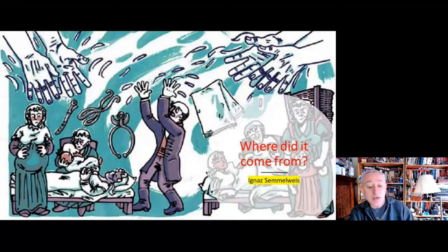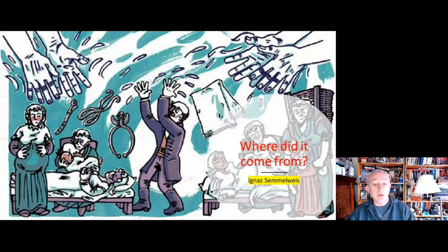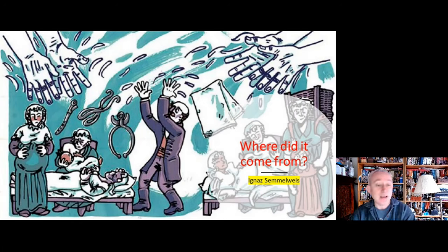Just a little bit of history because I think this does help with the context. There was a guy called Semmelweis who was working in the Great Hospital in Vienna in the 1840s and he was overseeing two maternity clinics. One of these maternity clinics had a mortality rate of 2%, the other one had a mortality rate of 10%.